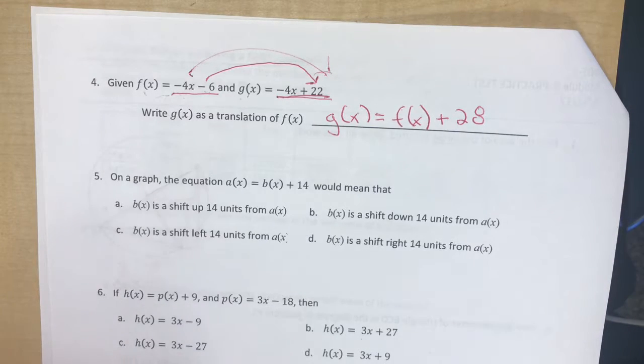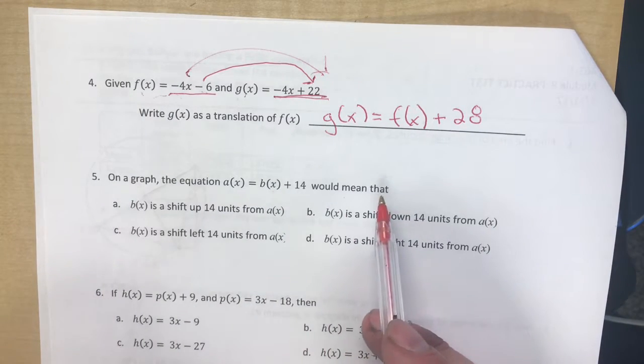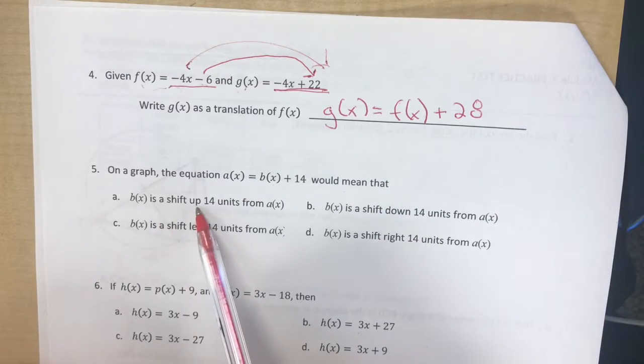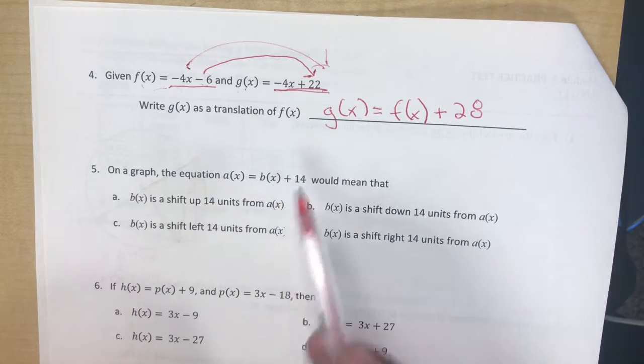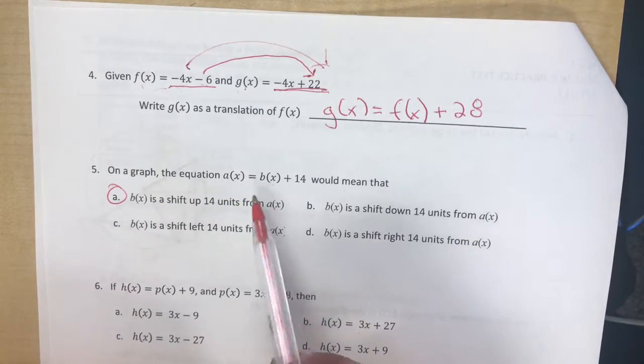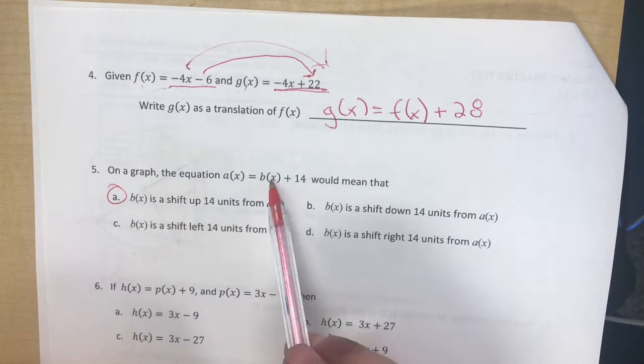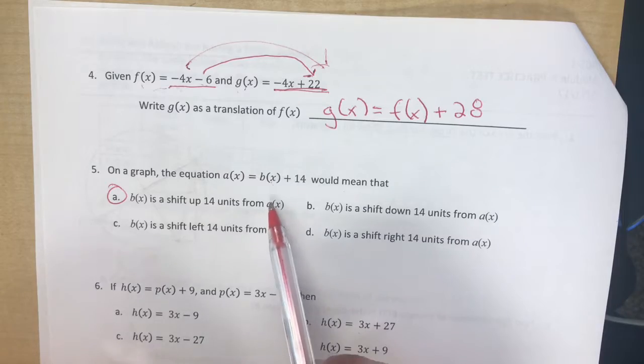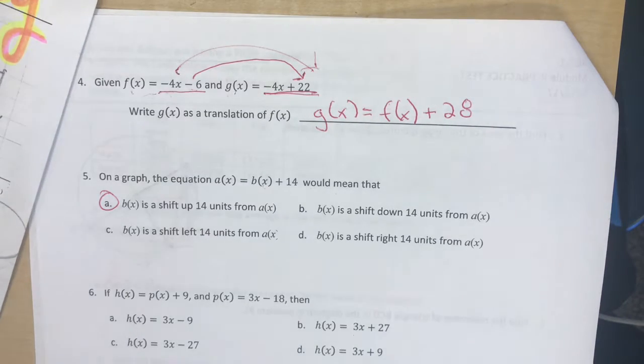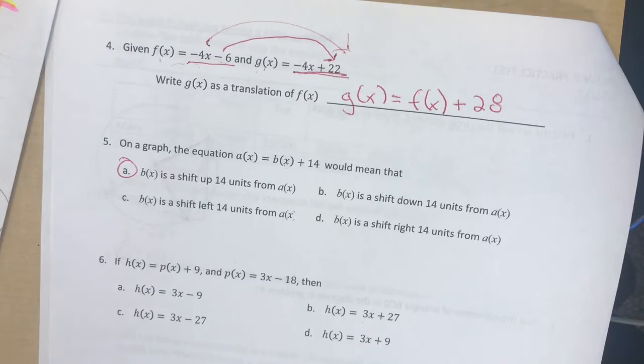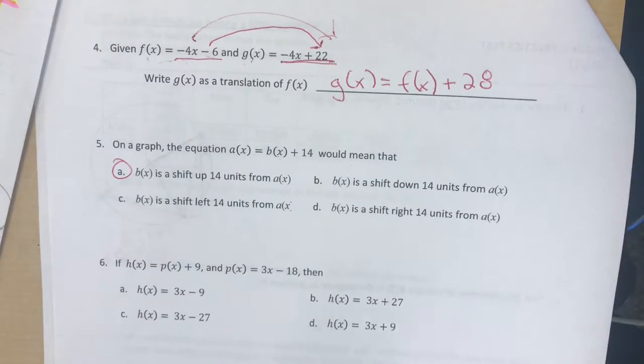Number 5, on a graph, the equation a(x) equals b(x) plus 14 would mean that b(x) is a shift up 14 units from a(x). So b(x) is 14 up from a(x). Give me just a second here. I just want to double check this.